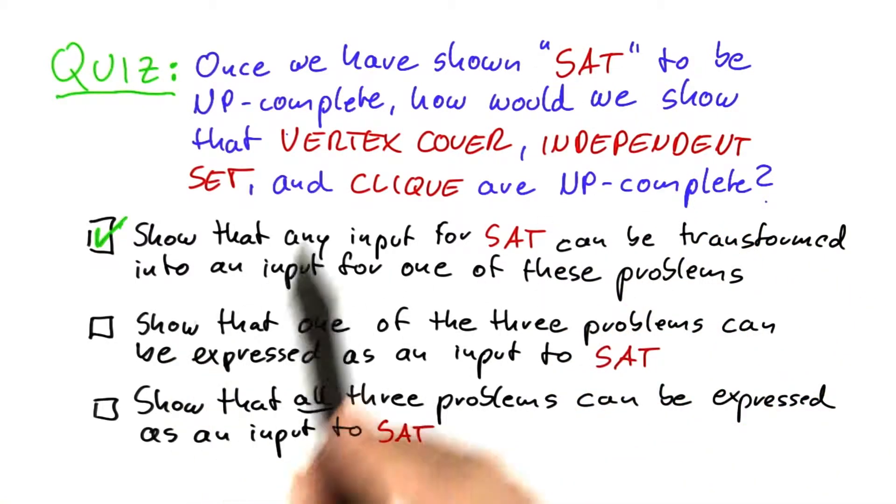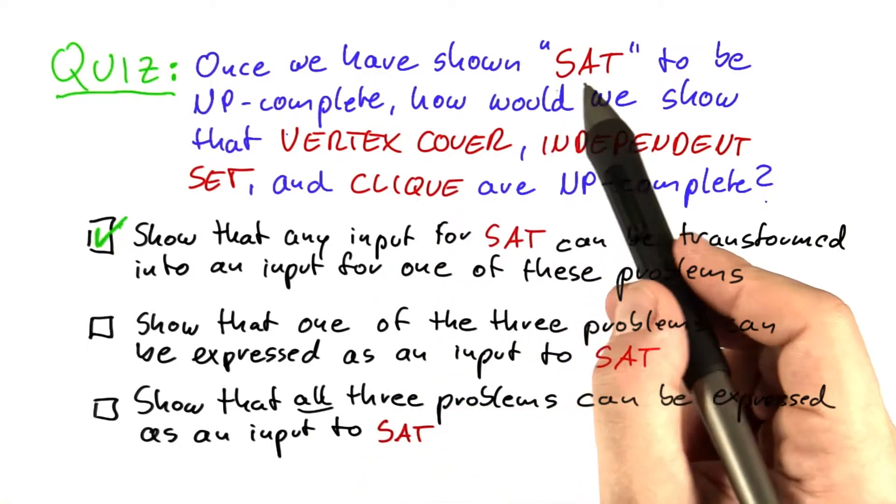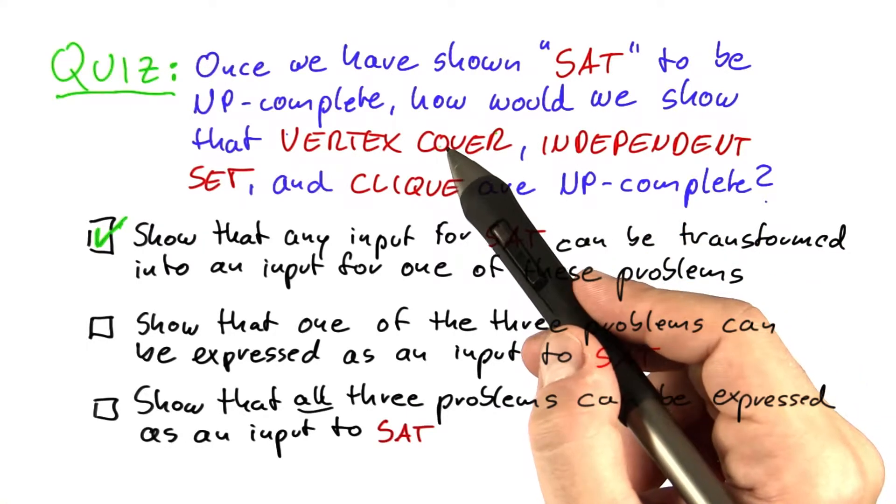So just showing that, for example, you could take vertex cover and transform it into an input for SAT would only show you that SAT is at least as hard to solve as vertex cover.